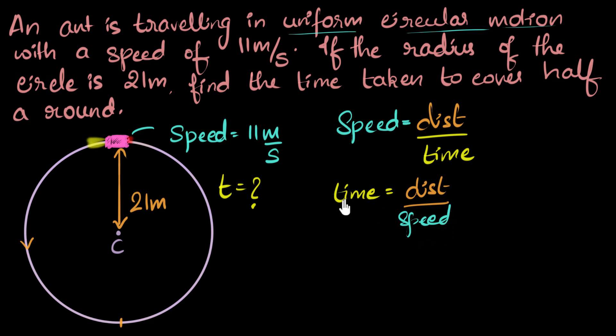And speed is given to us. We can figure out what the distance is. We should only think about distance for half a round. Because only for half a round, I need to calculate the time. So again, if you couldn't do this earlier, no problem. Now again, can you see if you can give it a shot? Go ahead, give it a shot.